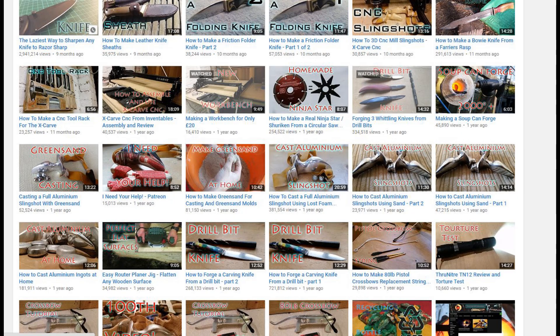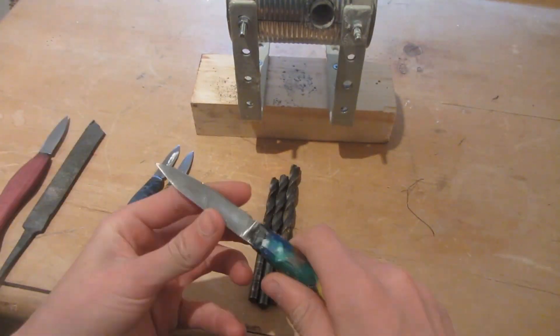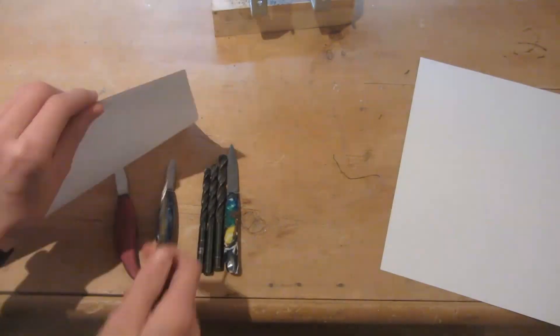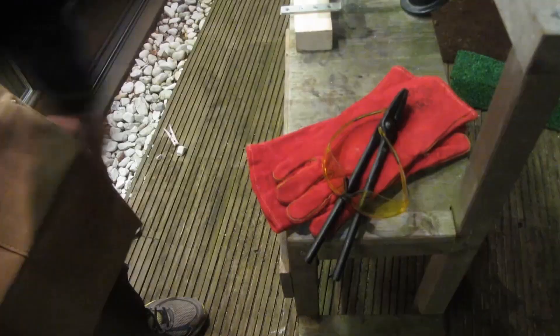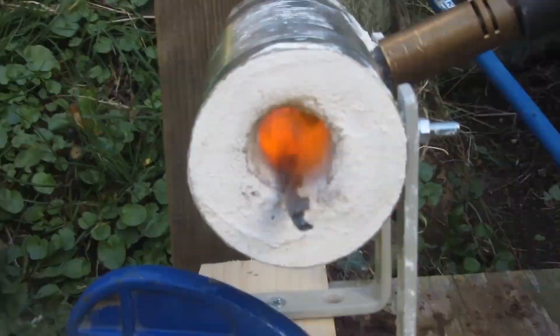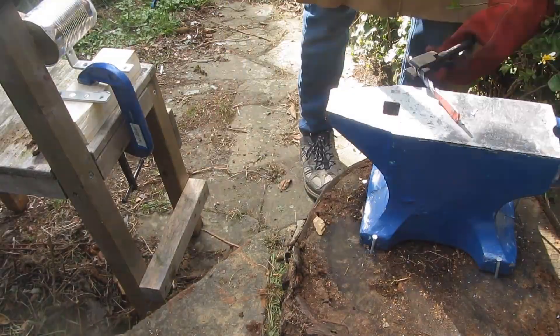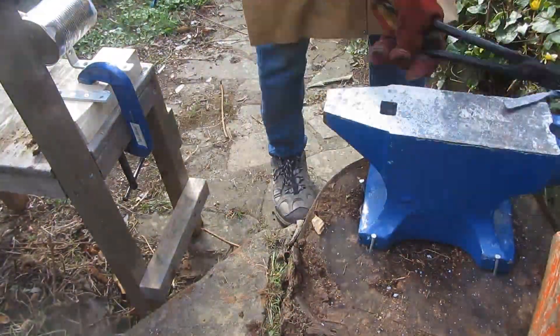Since I've already got two separate tutorials on how to forge a knife from a drill bit, I'm going to be focusing today mainly on the handle. If you want more detail on the forging process, you can check out either of my older videos on how to forge drill bit knives. The links will be in the description down below.